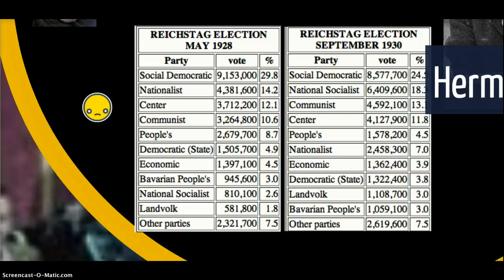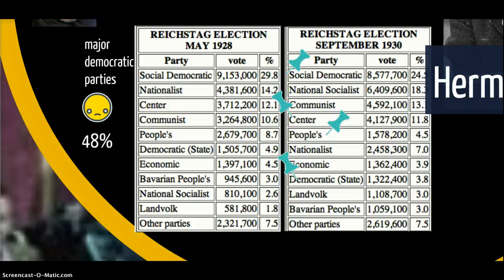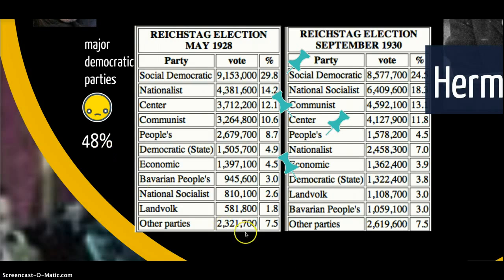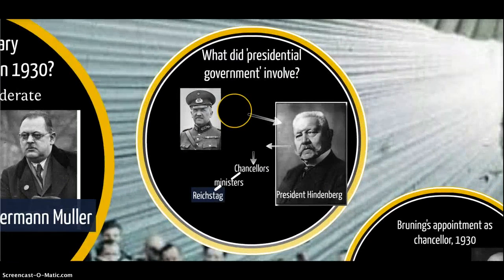There was now a very significant event in the September 1930 election. The Social Democrats, the Centre Party, the People's Party, and the Democratic Party — the total received by these major democratic parties which had formed a coalition before — was only 48%. So even if these moderate pro-democracy parties had managed to come together, they wouldn't have been able to form a workable coalition. They no longer formed more than 50%. What you have now is a period of presidential government — there is no coalition formed within the Reichstag which can form a majority of more than 50%.